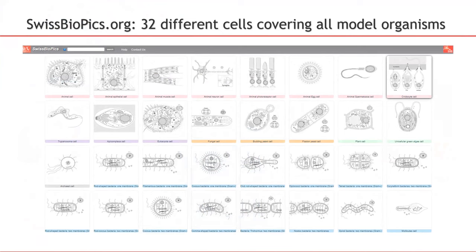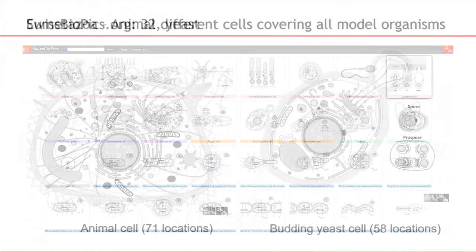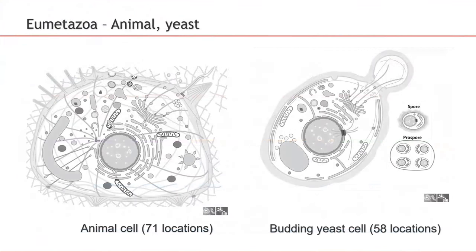It also covers rod-shaped, club, spiral, and other more exotic forms of bacteria and archaea. For example, the animal cells have 71 locations in SwissBioPix images, and you see a budding yeast cell.